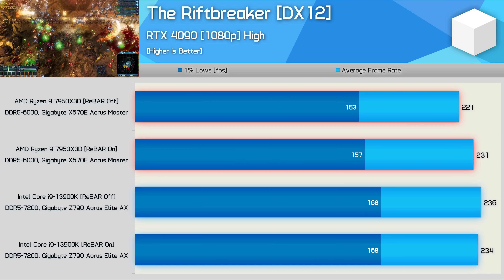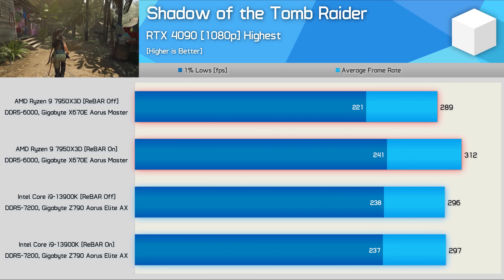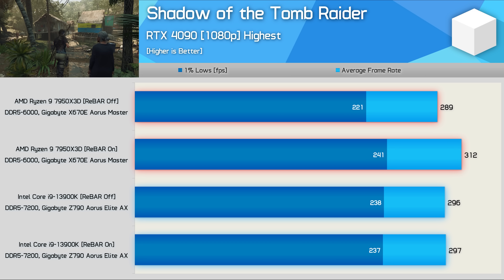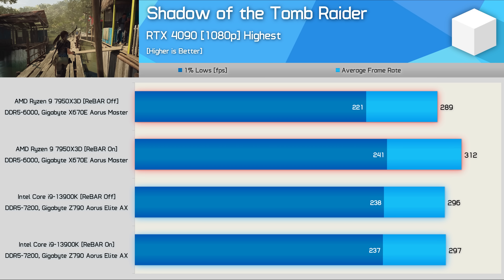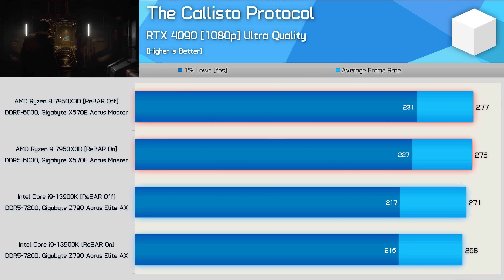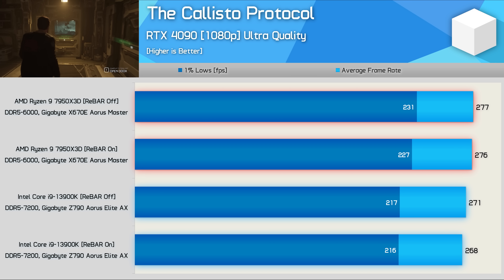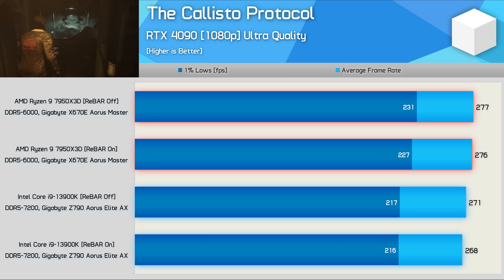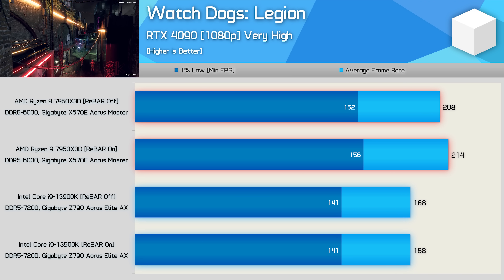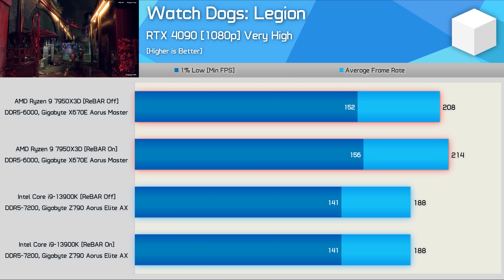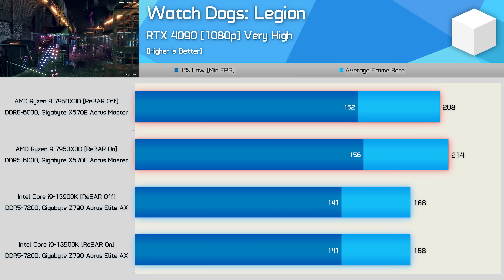In Shadow of the Tomb Raider, the 13900K saw no real performance change with or without rebar, but the 7950X 3D was 8% faster with rebar on — making it 5% faster than the 13900K, or 3% slower without resizable BAR. In The Callisto Protocol, performance was much the same on both platforms regardless of rebar, with the 7950X 3D showing a 2% greater average and a 6% improvement to 1% lows. In Watch Dogs Legion, the 13900K delivered the same performance with or without rebar, while the 7950X 3D saw a mild 3% boost with the technology on, making it 14% faster than the 13900K in this example.